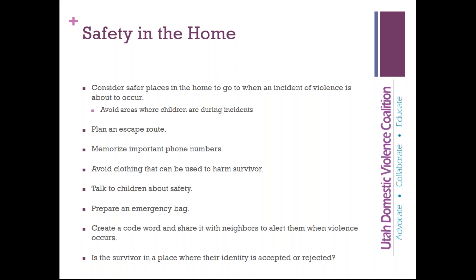Consider creating a code word and sharing it with neighbors to alert them when violence occurs. At a previous presentation, someone shared that neighbors heard a fight, approached when it was safe, and said 'if you need us to call the cops, go outside and yell orange.' It doesn't have to be obscure — it could be something like 'I'm taking the garbage out now' or 'my kids want to come over and play with your kids.' Something incognito that doesn't make the abuser react. Also consider whether the survivor is safe when their identity is accepted or rejected — for example, a transgender person whose family doesn't accept them may not have traditional support options.